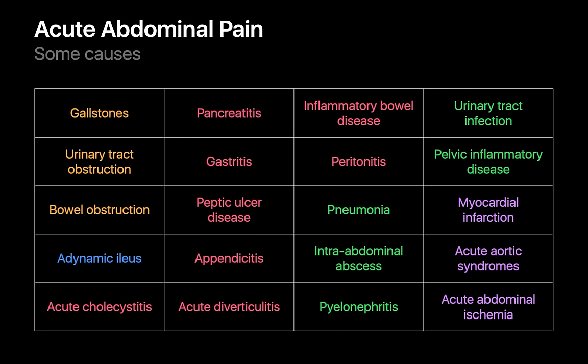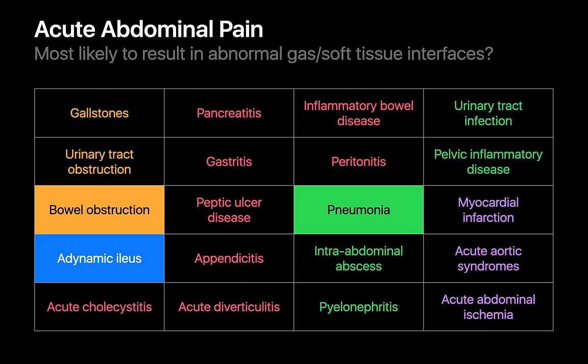Which of these disorders do we have a sporting chance of recognizing on an abdominal radiograph? Bowel obstructions, adynamic ileus, and basilar pneumonia can cause somewhat specific abnormal gas-soft tissue patterns that we can perceive on an abdominal x-ray, so they're on the list of disorders we might have a shot at recognizing on an abdominal film.